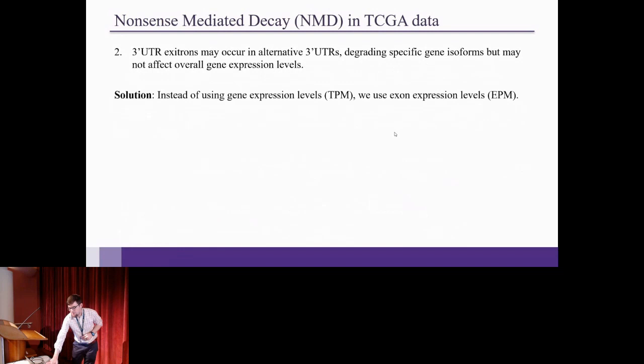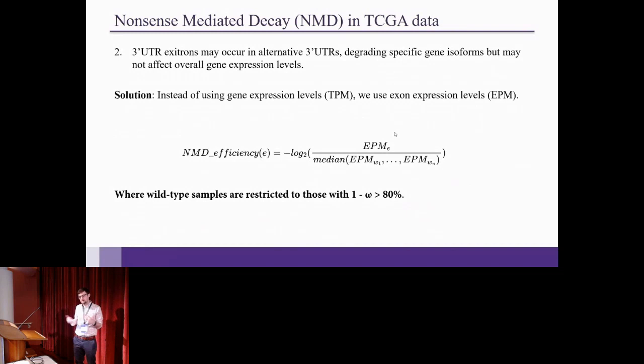So to get around the second problem, we basically use EPM instead of TPM, where EPM is the exon expression levels instead of the gene expression levels. It's kind of hard to calculate exon expression levels for various reasons, but if you do it correctly, it kind of works out. So basically, we calculate NMD efficiency by comparing the EPM of exotron spliced transcripts to the median EPM expression of wild-type transcripts for which there is enough coverage to find the exotron.